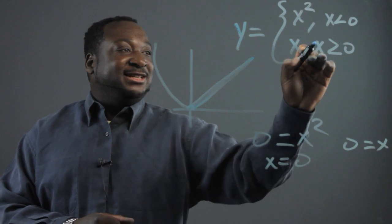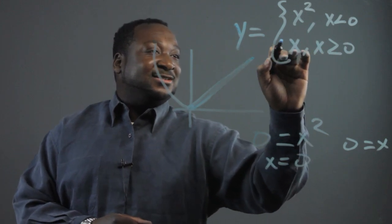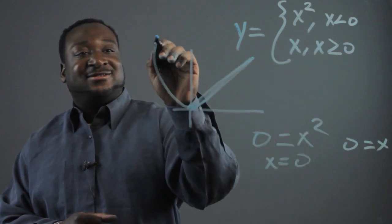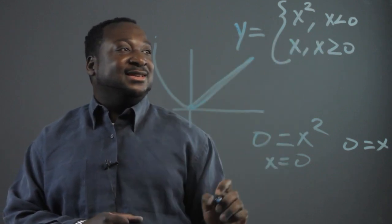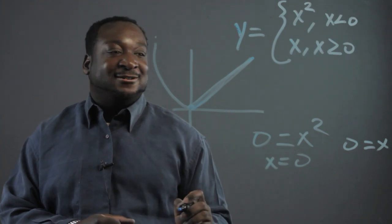It's only for this function here. X is never equivalent to 0 for the first piece because x is always less than or equal to 0.